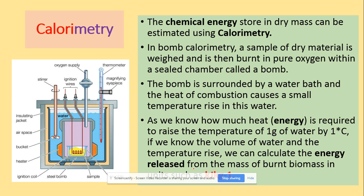The method for estimating energy stored in biomass is calorimetry. A sample of dry material is weighed and burned in pure oxygen within a sealed chamber called a bomb calorimeter. The heat released warms a surrounding water bath, and knowing how much energy is required to raise the temperature of each gram of water by one degree, we can calculate the energy released from the biomass. The units are kilojoules per kilogram of biomass.